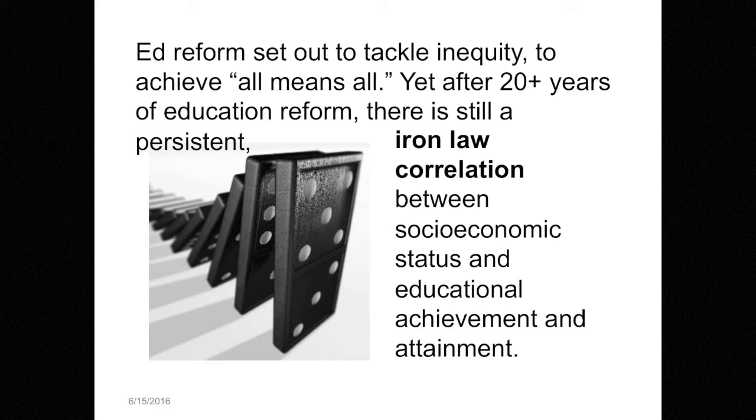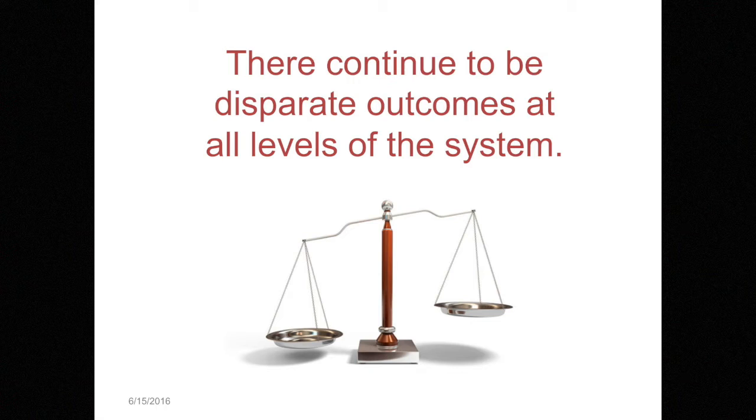We've been in a massive period of education reform in this country for the past 20 to 25 years. Every state, including Illinois, has been engaged in this. We set out to achieve a goal of preparing all of our students — and we said all means all, no excuses, no exceptions — to be successful in our society. And yet, after 20-plus years of working at this, there's still an iron law correlation between socioeconomic status and educational achievement and attainment. We set out to build a school system that delivers on Horace Mann's old promise of meritocracy, but we still have some of the same deep, persistent achievement gaps that existed before we started.